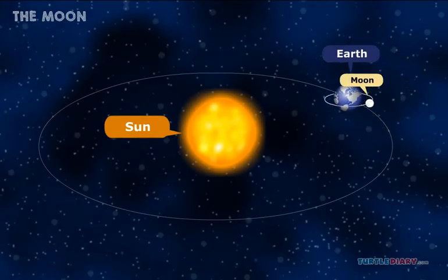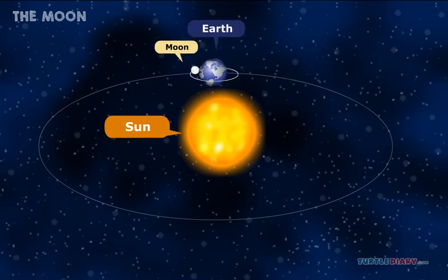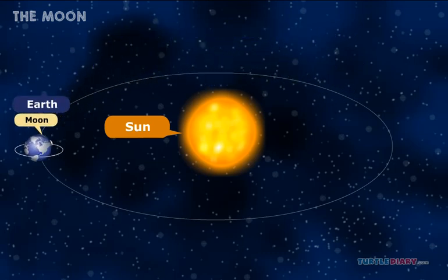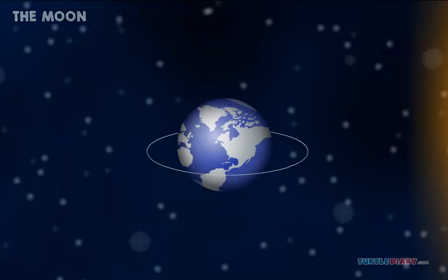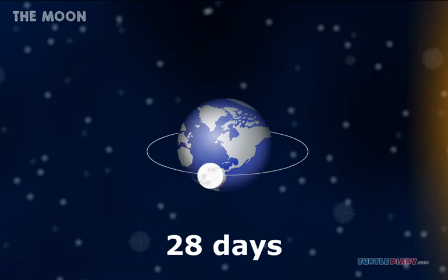A planet orbits a Sun. A Moon orbits a planet. The Moon takes 28 days to go completely around the Earth.